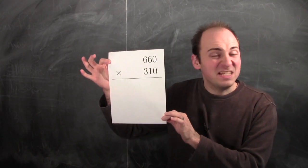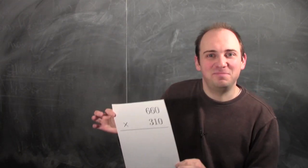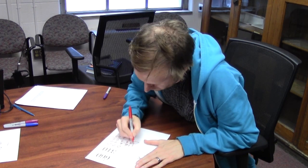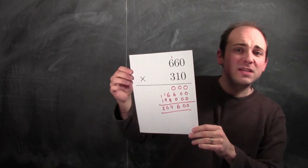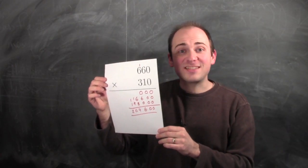Here is an arithmetic problem: 660 times 310. I'm going to give this exercise to Bart. So the product of 660 and 310 is 204,600.